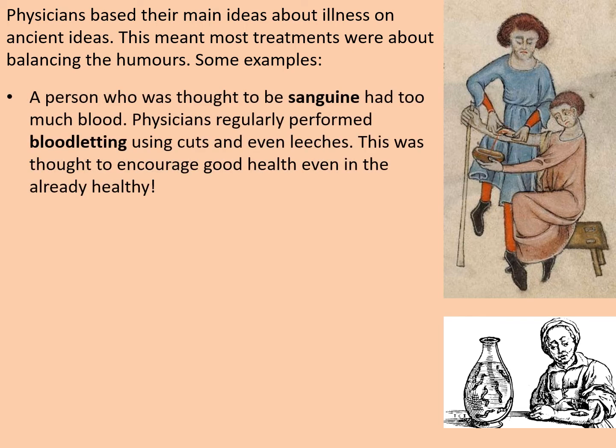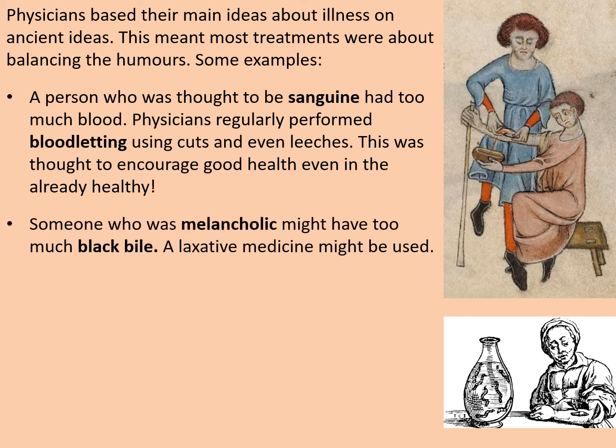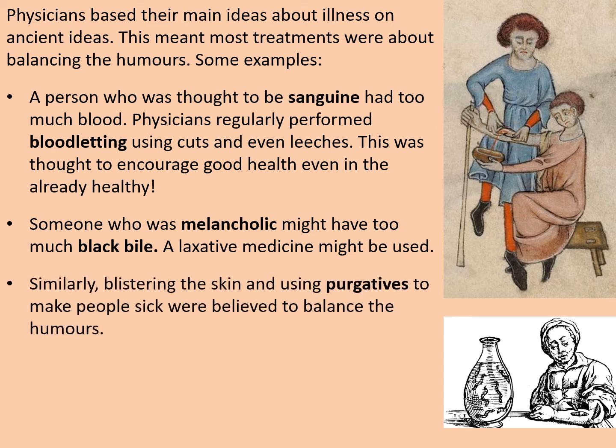Here are some examples. A person who was thought to be sanguine had too much blood. Physicians regularly performed bloodletting, using cuts and even leeches to remove blood from the body. This was thought to encourage good health, even in the already healthy. Quite famously, monks were bled regularly because it was felt it made them less likely to desire things like red meat and women. Someone who was melancholic might have been believed to have too much black bile. Laxative medicines would have been used to try and balance that. Similarly, blistering the skin and using purgatives to make people sick were believed to balance the humours.